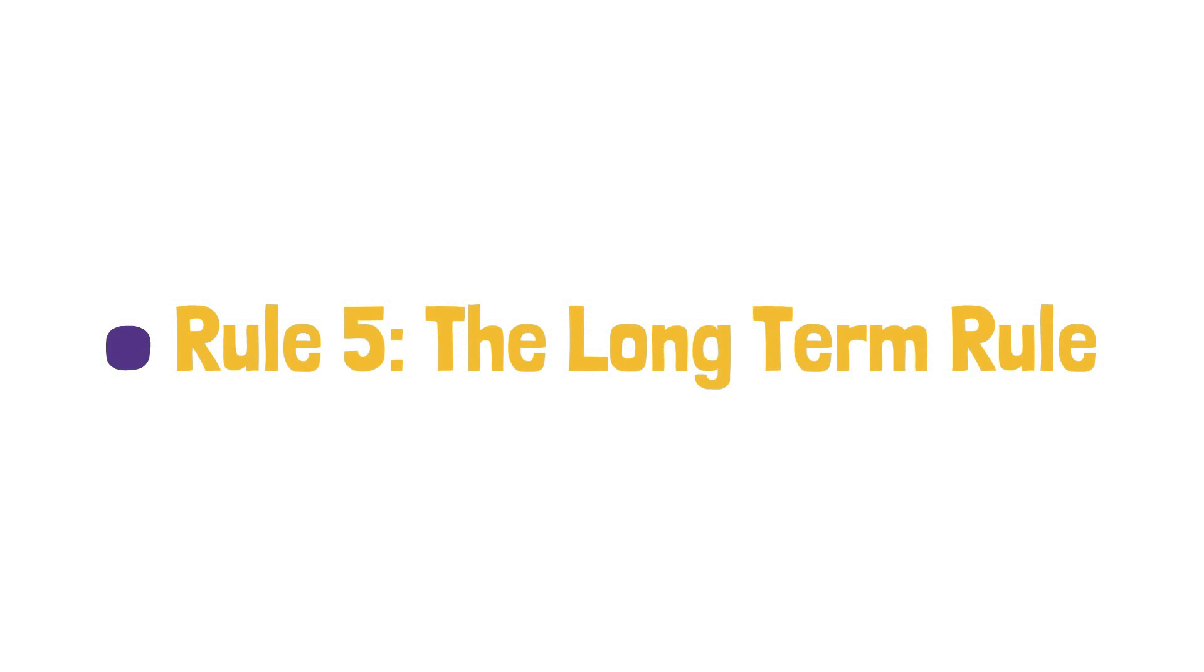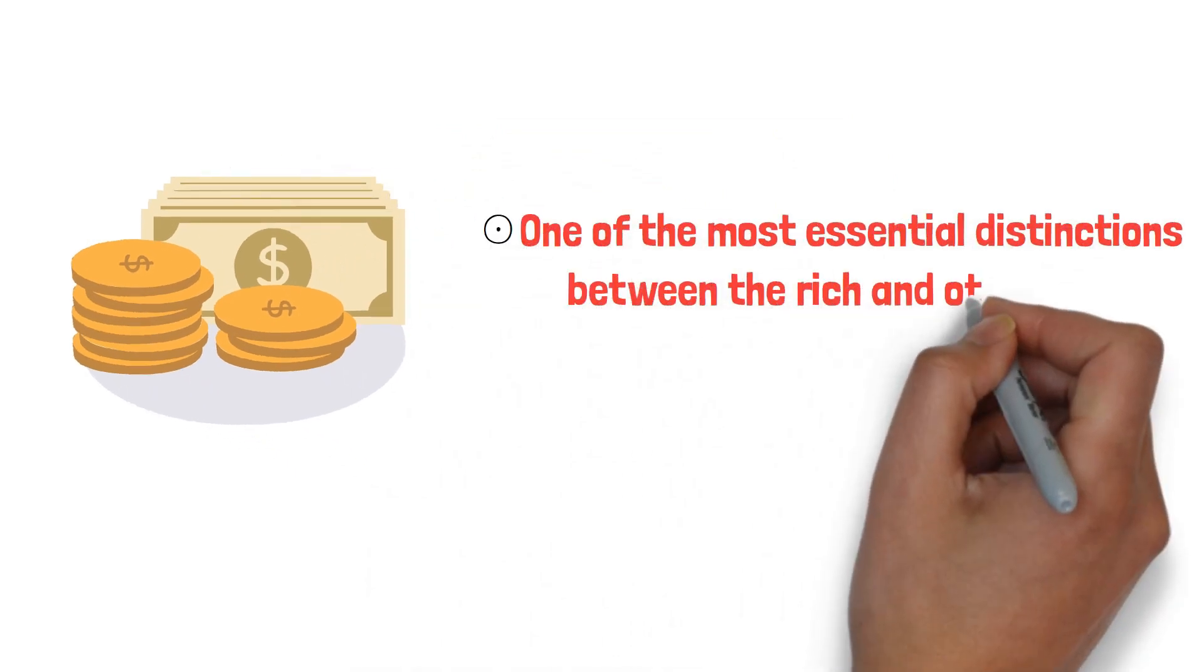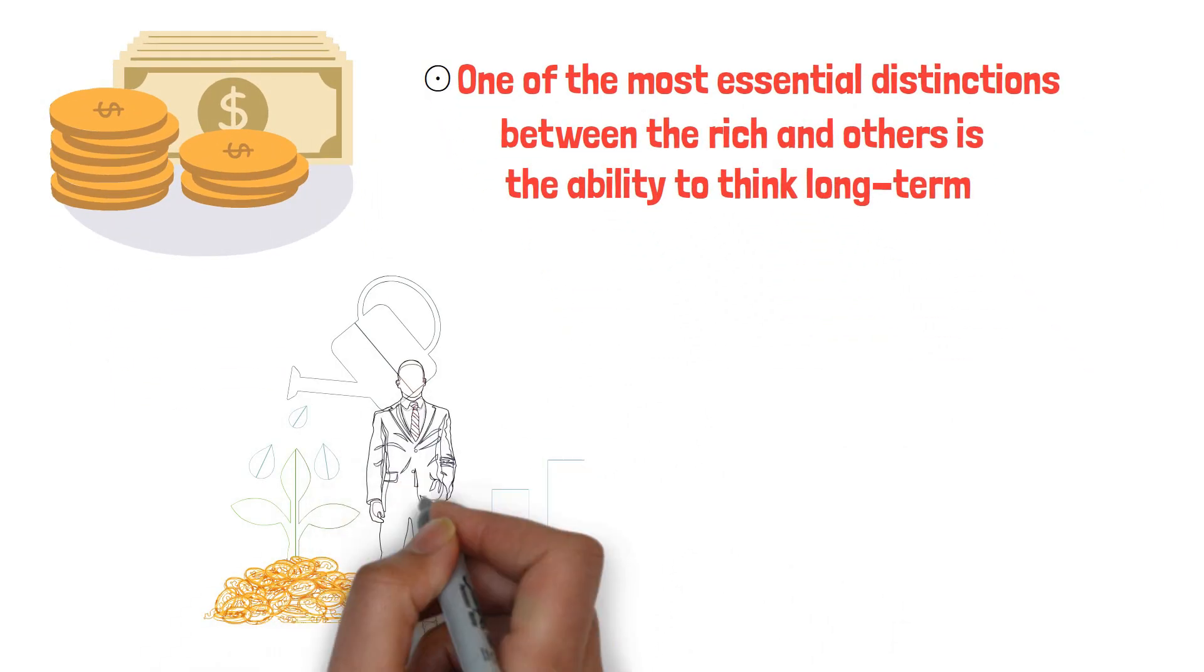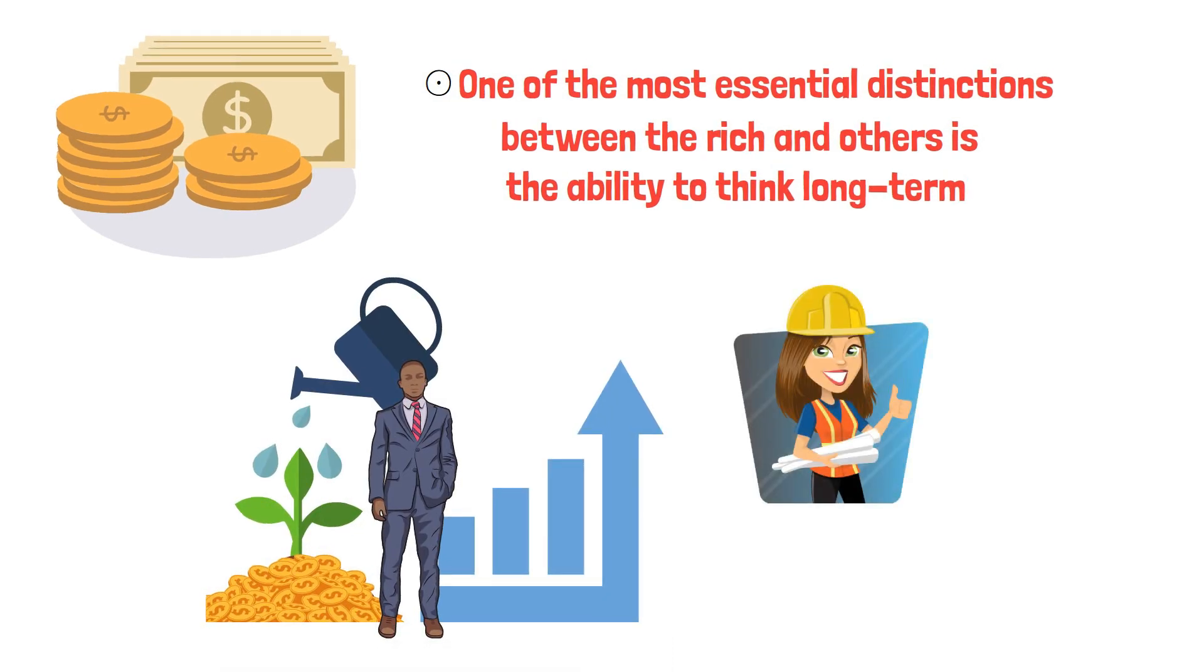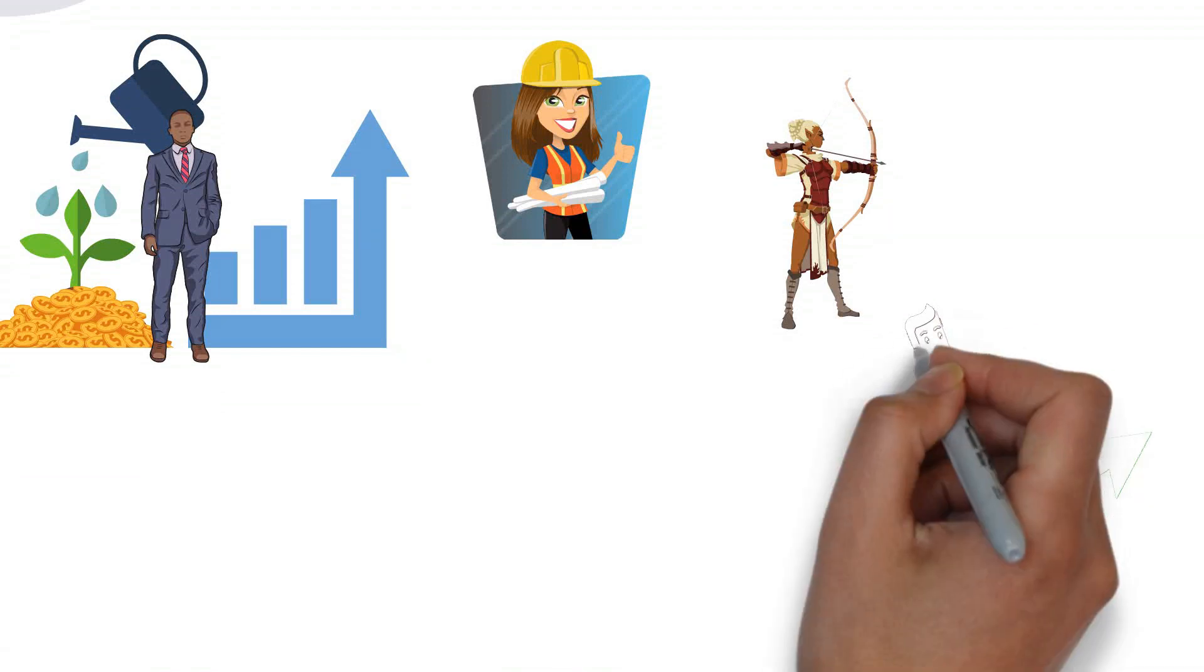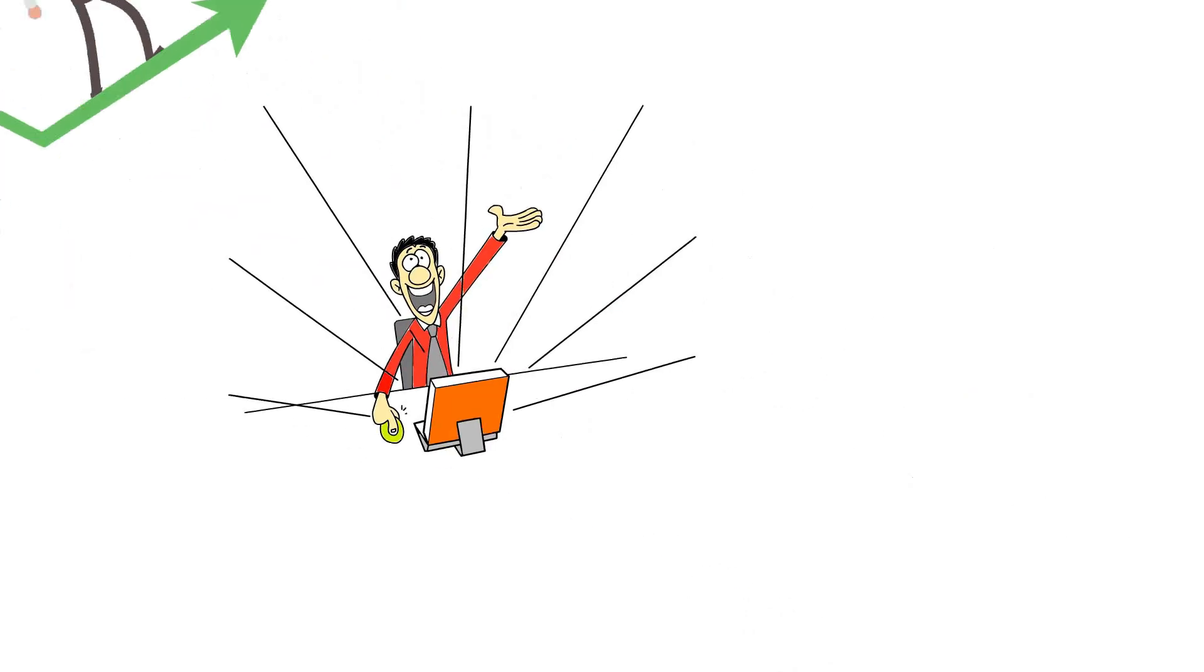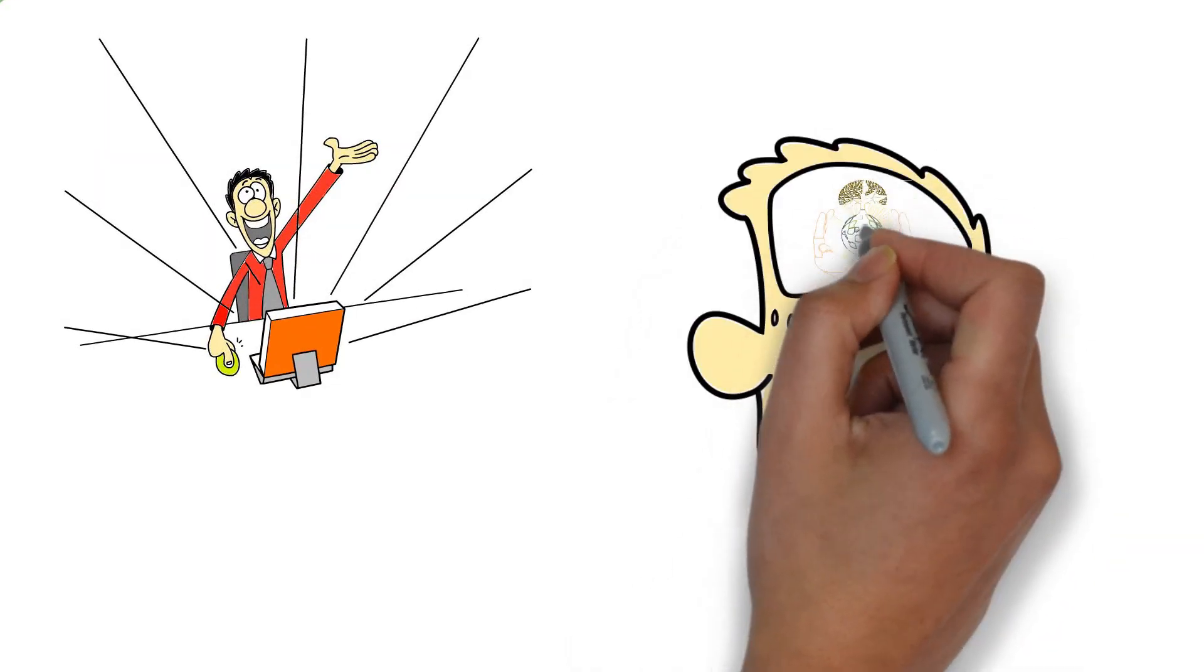Rule number five, the long-term rule. When it comes to financial success, one of the most essential distinctions between the rich and others is the ability to think long-term. The wealthy understand that the path to financial freedom is built over time. It requires careful planning, dedication, and a long-term mindset. While focusing on immediate needs and short-term pleasures might be tempting, the rich know that real wealth is built by keeping an eye on the future.